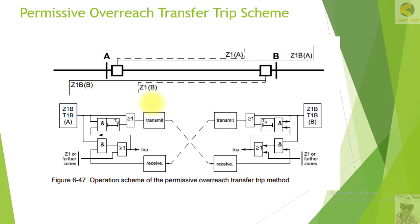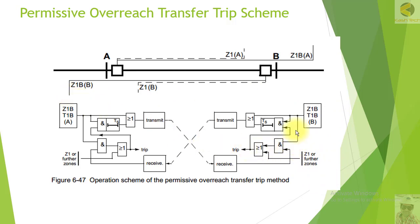In the permissive overreach scheme, the relay sends the permissive command to the remote end when it picks up in Z1B — this is the same as in PUTT. This scheme is normally used on short lines. For example, if the short line impedance is 0.5 ohm, 80% of the line would be approximately 0.4 ohm, which is very small and difficult to set. In that case, permissive overreach transfer trip is a good option, enabling faster tripping.